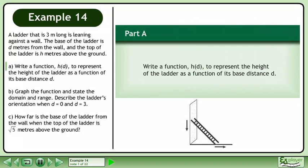A ladder that is 3 meters long is leaning against a wall. The base of the ladder is d meters from the wall, and the top of the ladder is h meters above the ground. In Part A, write a function h(d) to represent the height of the ladder as a function of its base distance d.